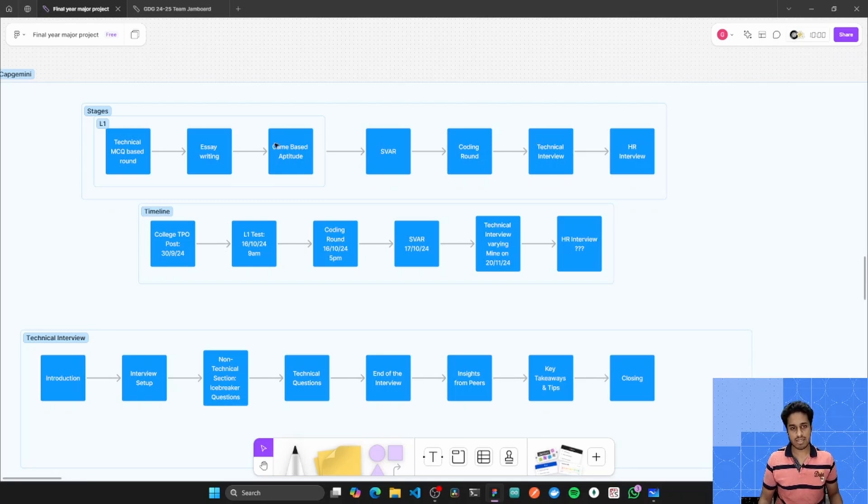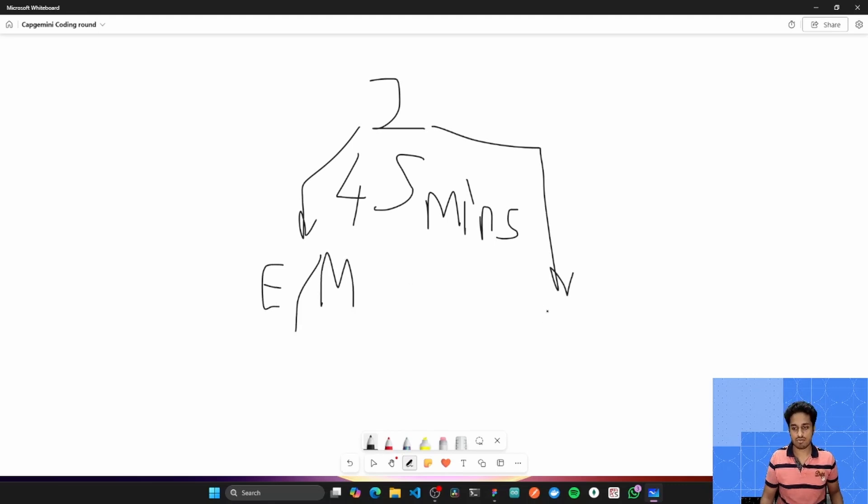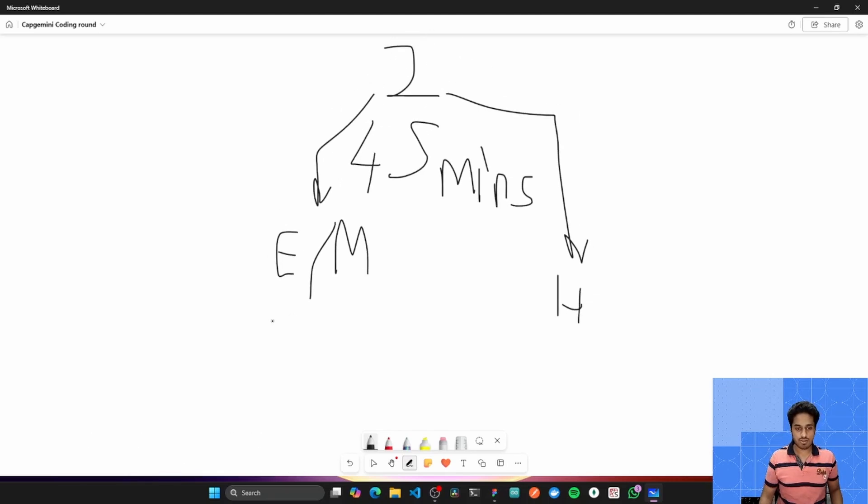Now after this game based aptitude round, they give you the eligibility list for coding round. People who appear for the coding round will be given two questions and they'll have 45 minutes in their hands to solve these questions. In this 45 minutes, the first question would be of easy to medium level, depending on how much you have practiced, and the second question is for sure to be a higher level question. If you manage to solve this first question, you become eligible for the package of 5.5.